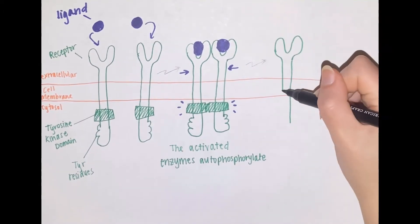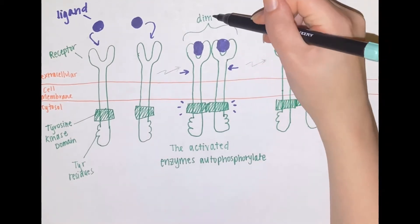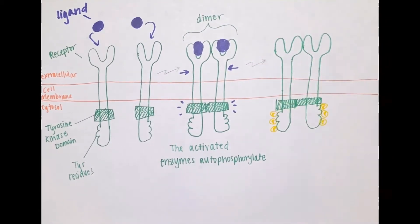The kinase then autophosphorylates, meaning it phosphorylates itself. The RTK then acts as a docking site for other proteins to become phosphorylated and thus creating a signal cascade.